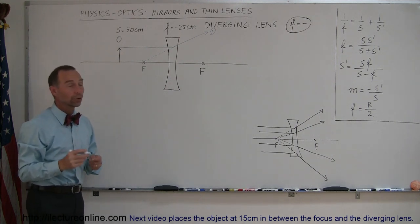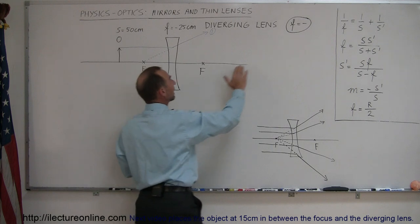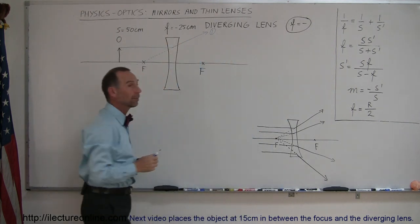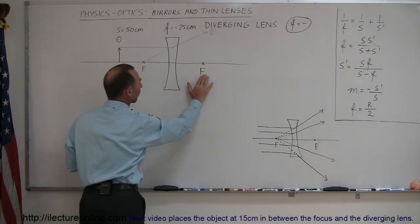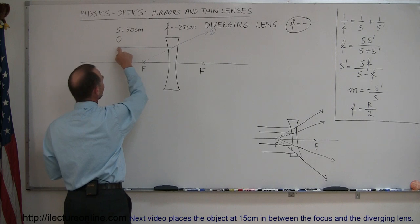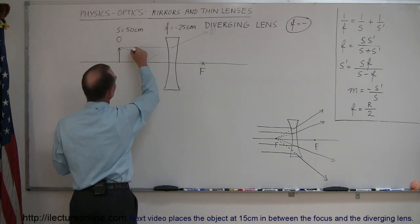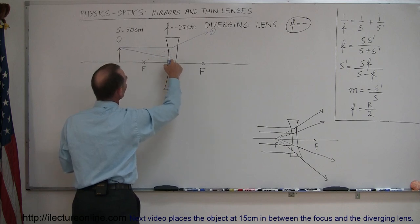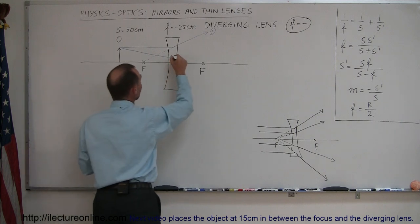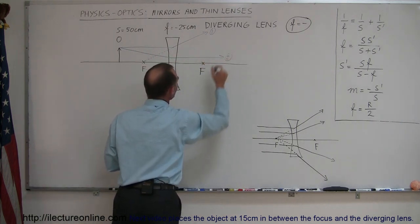Ray number two is through the focal point, but since this is a diverging lens, the focal length is negative. Therefore the focal length is negative 25 centimeters, so the focal point of interest would be the one back here. We draw a ray line from here to this focal point right there. When we get to the lens, instead of continuing to the focal point, it will diverge and continue parallel to the normal beyond that point. That will be ray number two.